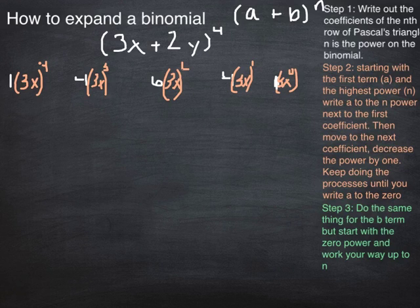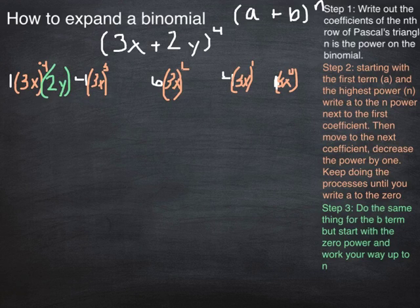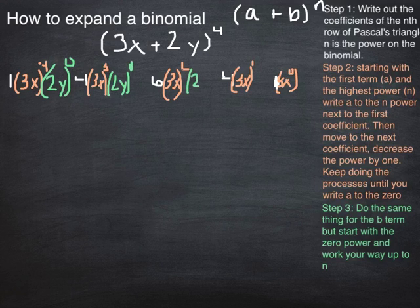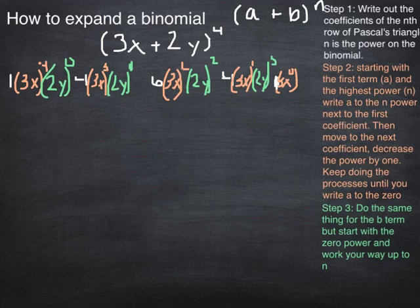So step 3 is the same process that we did for step 2. However, instead of starting with the A term to the n power, you're going to do the B term, 2y, and you're going to start with 0 and you're going to work your way up. So 2y to the 0, 2y to the 1st, 2y to the 2nd, 2y to the 3rd, and 2y to the 4th.